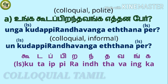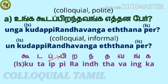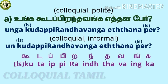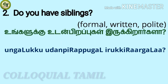To ask 'How many siblings do you have?' — the colloquial polite form and the colloquial informal form are covered. You already know some of these from previous videos. Let's move to the next sentence: to ask 'Do you have siblings?'